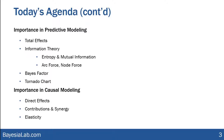That was all about predictive modeling; then we'll move into the concept of importance in causal modeling. There we'll talk about direct effects, contributions, and elasticity. Please note that not all of these measures belong exclusively to predictive or causal modeling — I'm merely presenting them in these contexts. Some are truly exclusive to either side: total effects in predictive modeling, direct effects in causal modeling. But others may have applications on both sides, and I'll emphasize this distinction throughout today.